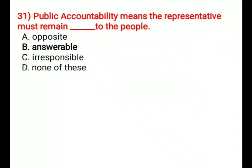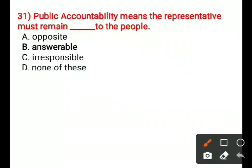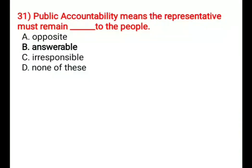Question 31: Public accountability means the representative must remain — to the people. Options are: A) Opposite, B) Answerable, C) Irresponsible, D) None. The correct answer is B, Answerable. These are the questions discussed today; remaining questions will be discussed in the next class. Thank you.